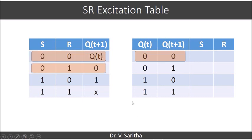Here we have to observe how to get it. First case: Q(t) and Q(t+1) are both 0. So these two cases we are supposed to consider — Q(t+1) equal to Q(t) in one case, and Q(t+1) equal to 0 in the other. In these two cases, we can observe that S is 0 and R is 0 one time and 1 one time. So we say that S is 0 and R has a don't care condition.